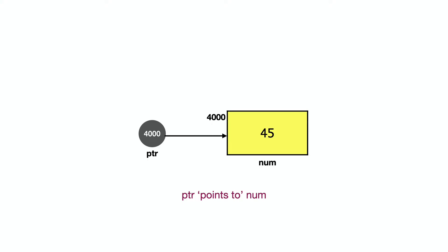The pointer variable stores the address of another variable. The pointer icon holds the address value. For example, if the address of num is 4000, and PTR is a pointer variable, then PTR stores 4000 — PTR points to num.